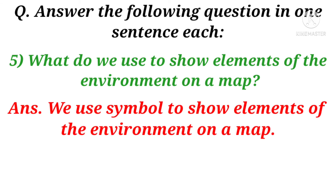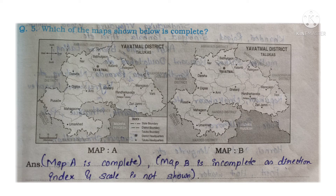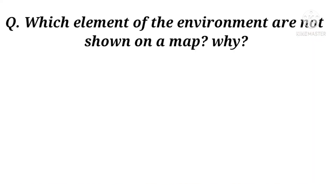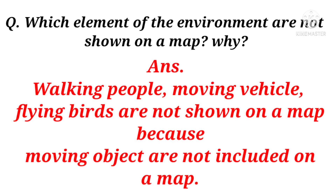Question 5: What do we use to show elements of the environment on a map? Here is the map in front of you. Which of the maps shown below is complete? Map A and Map B. Answer: Map A is complete and Map B is incomplete because in Map B the direction index and the scale are not shown, while in Map A everything is there. Question 6: Which elements of the environment are not shown on a map and why? Walking people, moving vehicles, and flying birds are not shown on a map because moving objects are not included on a map.